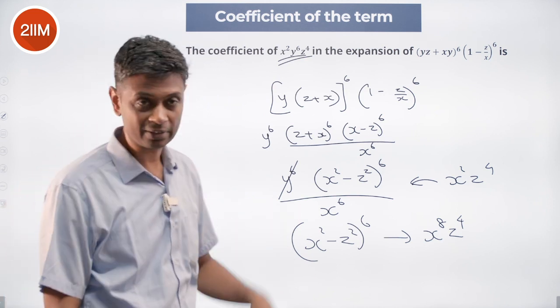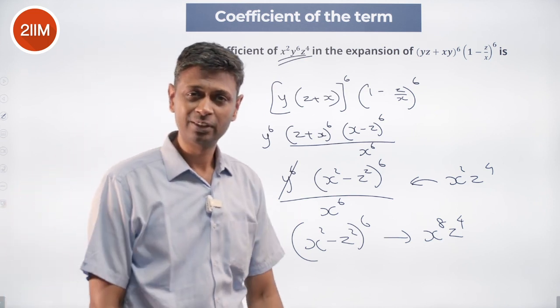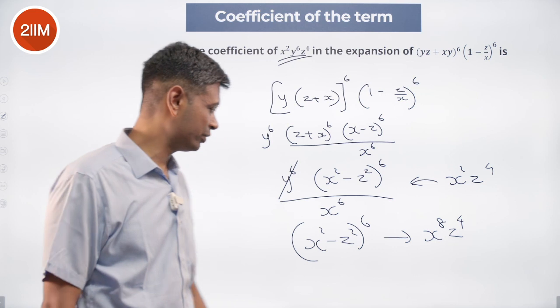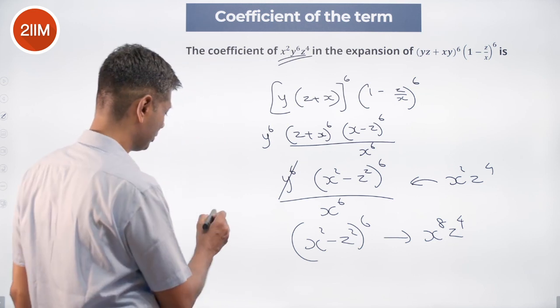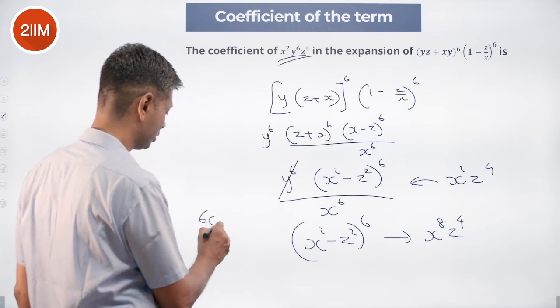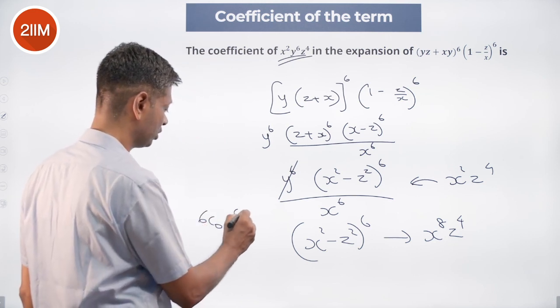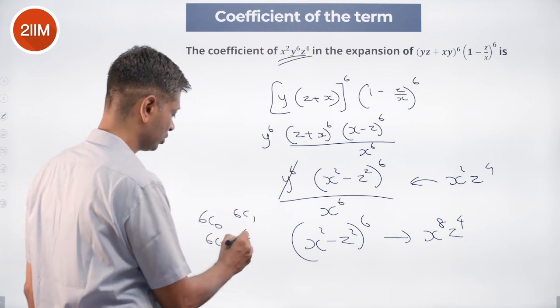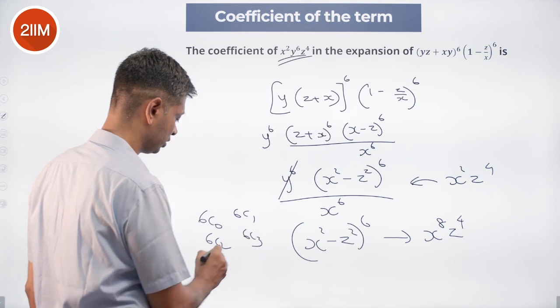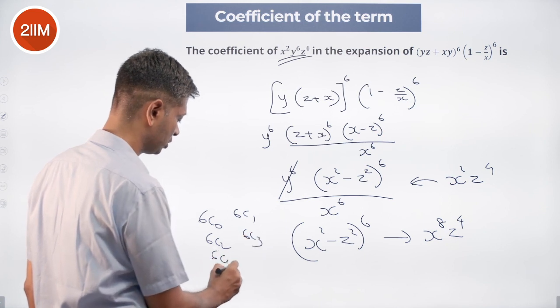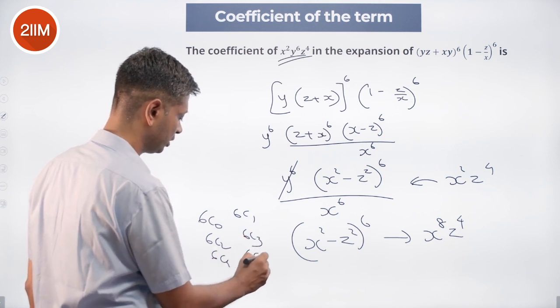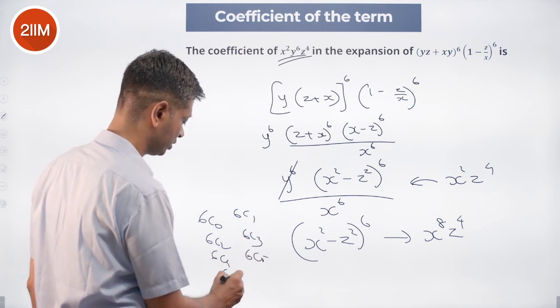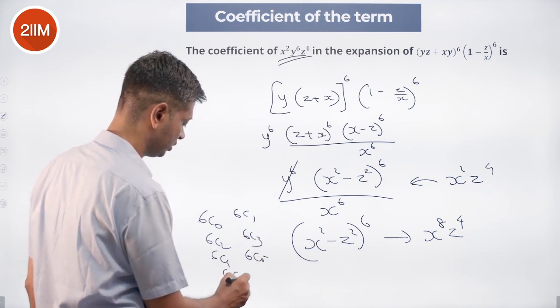So, x square minus z square whole power 6. To start with, the coefficients are going to be 6C0, 6C1, 6C2, 6C3, 6C4, 6C5, 6C6.